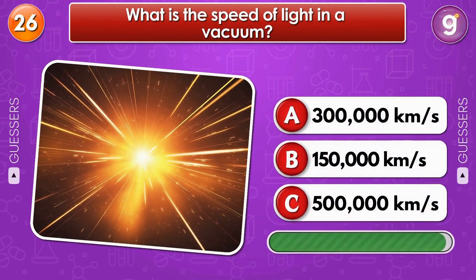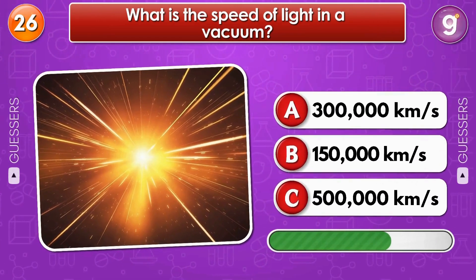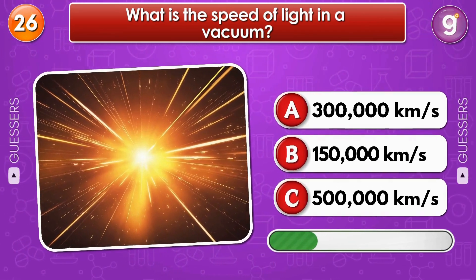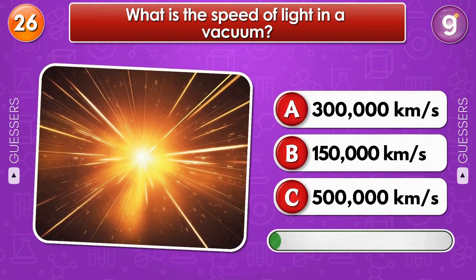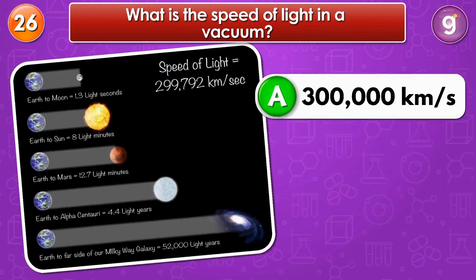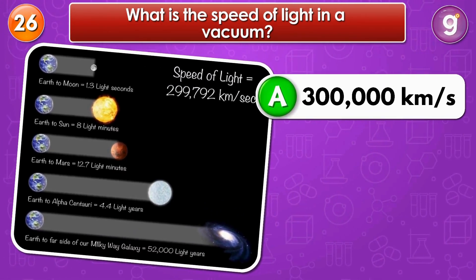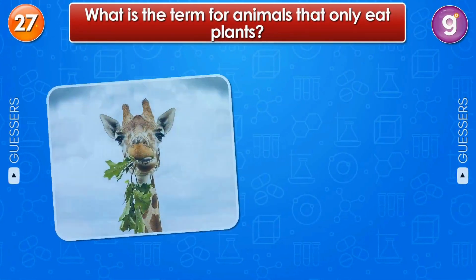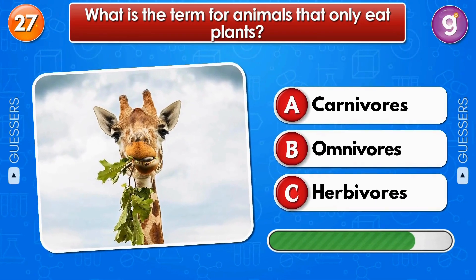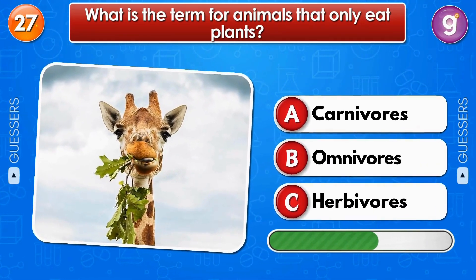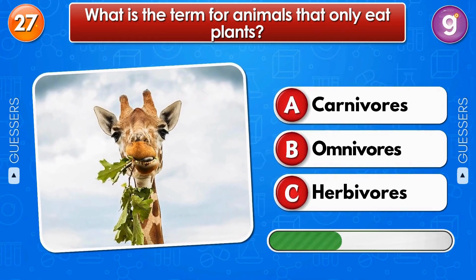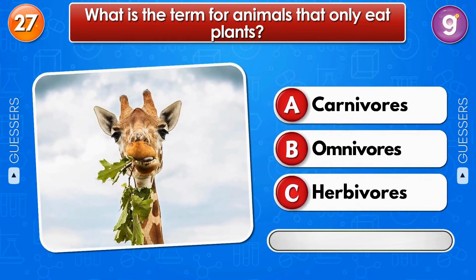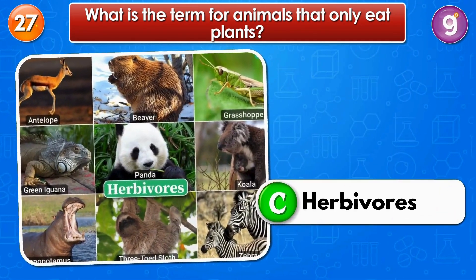What is the speed of light in a vacuum? 300,000 kilometers per second. What is the term for animals that only eat plants? They're called herbivores.